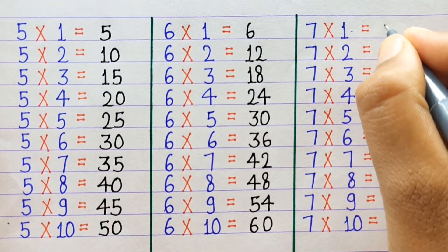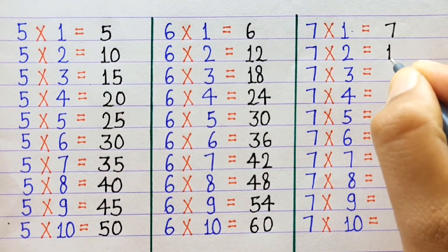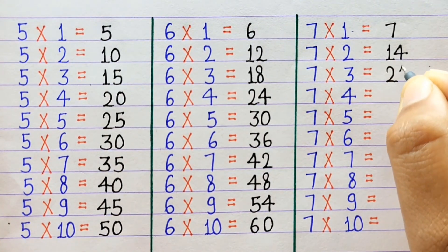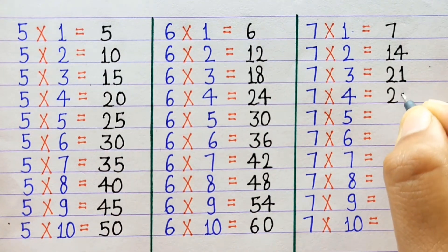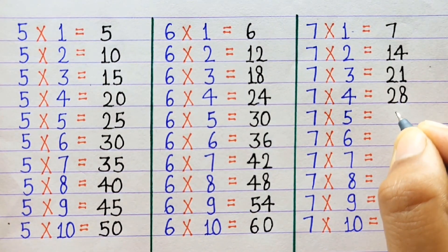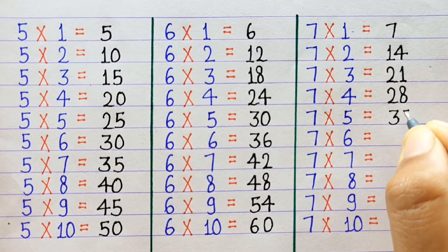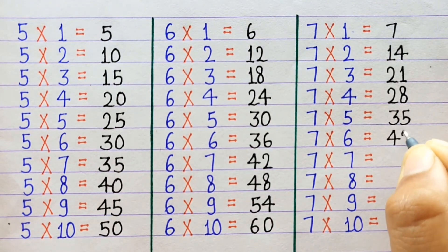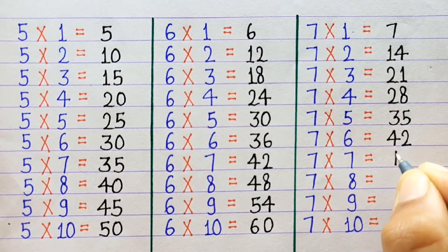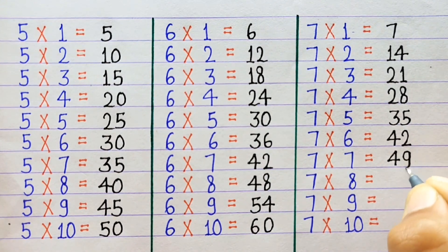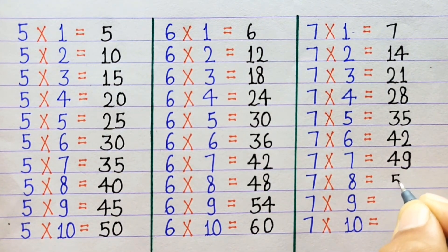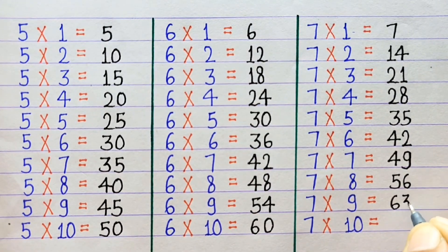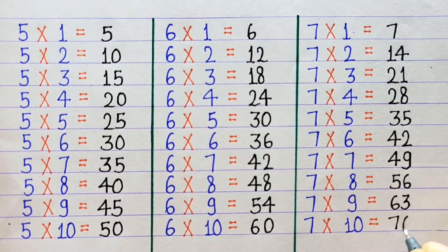7×1=7, 7×2=14, 7×3=21, 7×4=28, 7×5=35, 7×6=42, 7×7=49, 7×8=56, 7×9=63, 7×10=70.